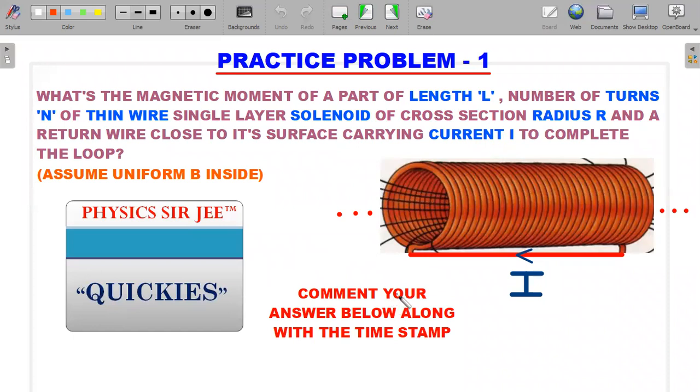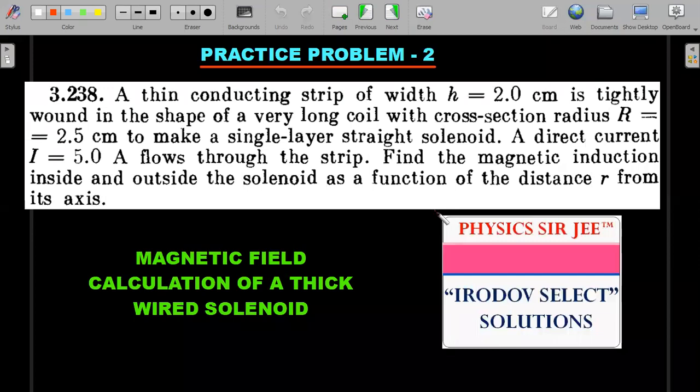The second one is a very famous problem from Irodov 3.238, a very important part of your JEE Advanced preparation. This is a thick wire solenoid. The previous practice problem was thin wire; this is thick wire wherein the current density vector and current per unit length vector concept comes into picture. This is a very important problem. I'll give the solution in the next Irodov select solutions.